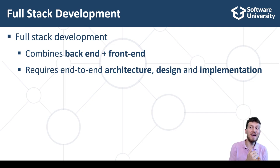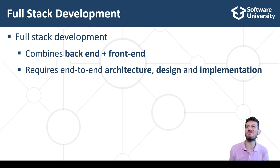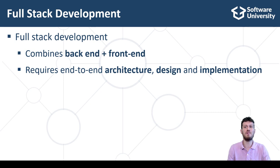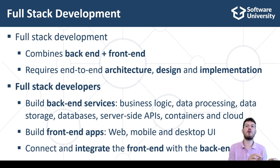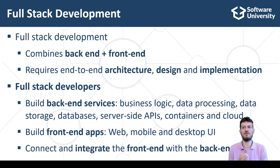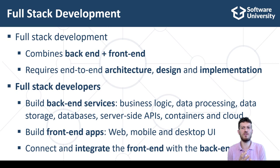Full-stack development combines backend and frontend development — this is what most software companies do when building software products. Full-stack development requires end-to-end architecture, design, and implementation of both server-side and client-side components and integrating them into a single software system. In most software projects the technical team consists of team leaders, backend developers, frontend developers, and QA engineers. Smaller teams combine the frontend and backend roles into a single full-stack developer role. Full-stack developers design and build software systems involving both backend and frontend development — they build backend services, implement business logic, data processing, data storage, databases, server-side APIs, containers, and cloud.